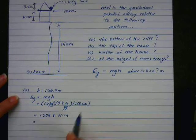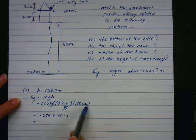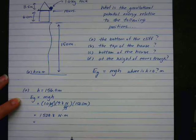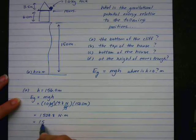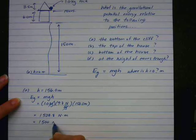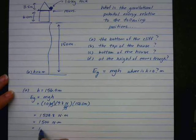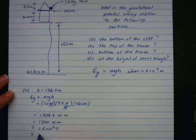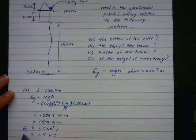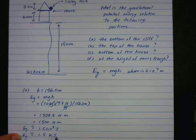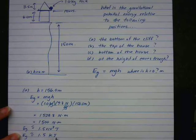A newton meter is a joule. And if I look at my values right here, the most number of significant digits I can have is 2. So I'm going to round that to 1,500 newton meters, or 1.5 times 10 to the power of 3 joules, or 1.5 kilojoules. This is the gravitational potential energy that the rock has relative to the bottom of the cliff.